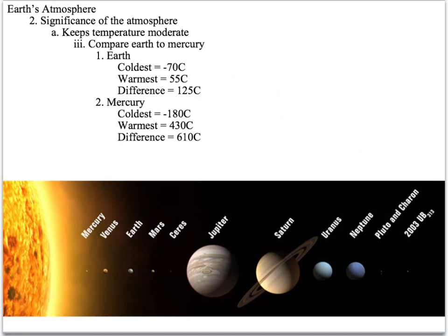Let's briefly compare two planets: Mercury and Earth. On Earth, the coldest temperature is negative 70 degrees Celsius and the warmest is 55 degrees Celsius, giving a difference of 125 degrees Celsius. Mercury is the closest planet to the Sun, yet it gets colder — negative 180 degrees Celsius — than Earth does at night. Mercury also gets far hotter during the day, giving a scorching difference of 610 degrees Celsius between day and night. That's insane — there's no way that could support life.